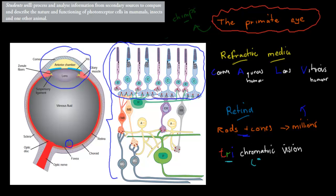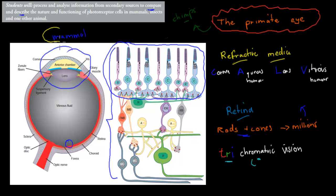And primates are mammals. The reason why I mention all this is because the dot point says students will process and analyze information from secondary sources to compare and describe the nature and function of photoreceptor cells in mammals, insects, and other animals. So here I've compared the primate eye, which is an example of a mammal, and I'm going to compare them to an insect and a worm.